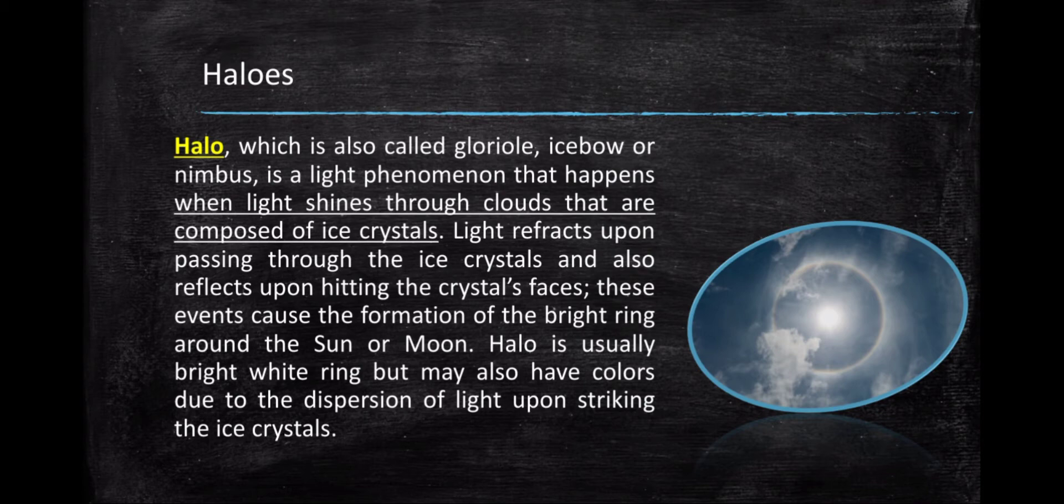These events cause the formation of the bright ring around the sun or moon. Halo is usually bright white ring, but may also have colors due to the dispersion of light upon striking the ice crystals. I have here an example of a halo. It has a bright ring around the sun.